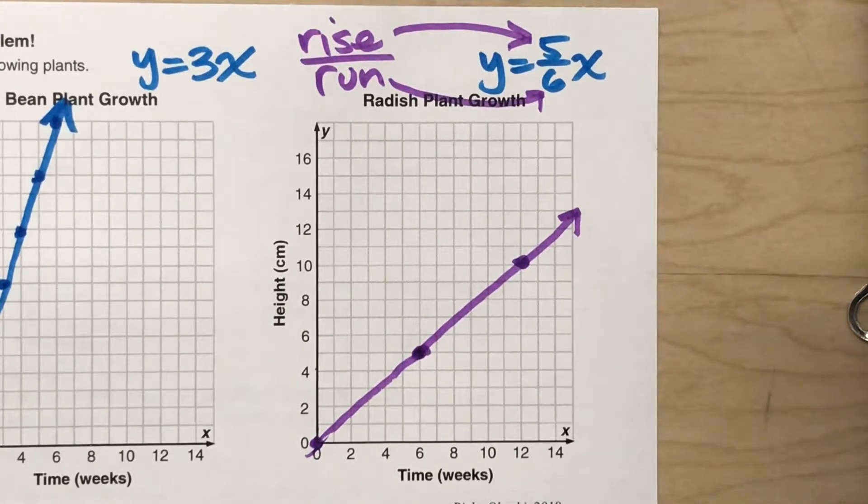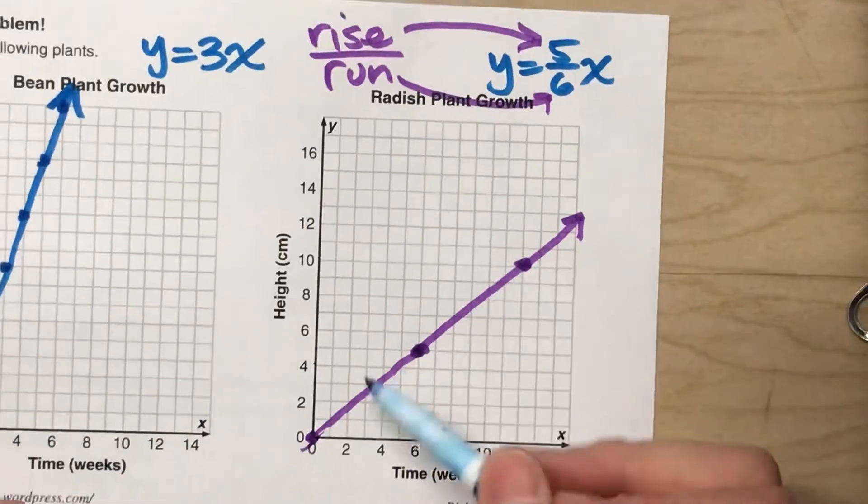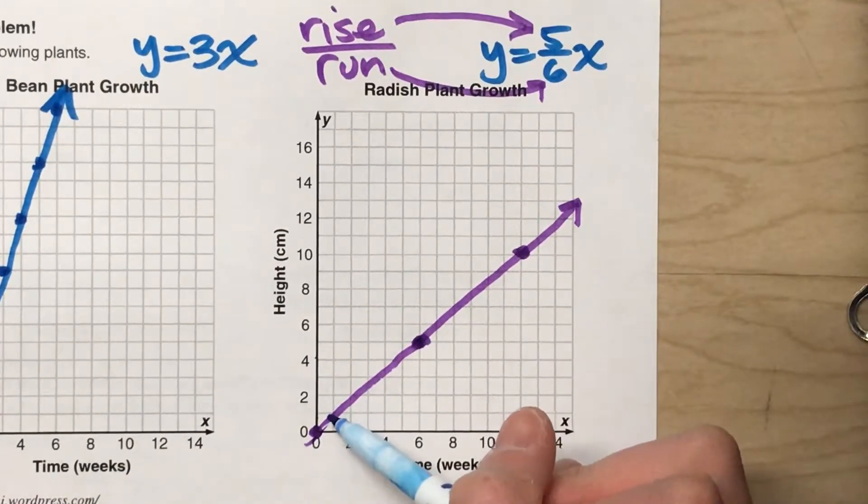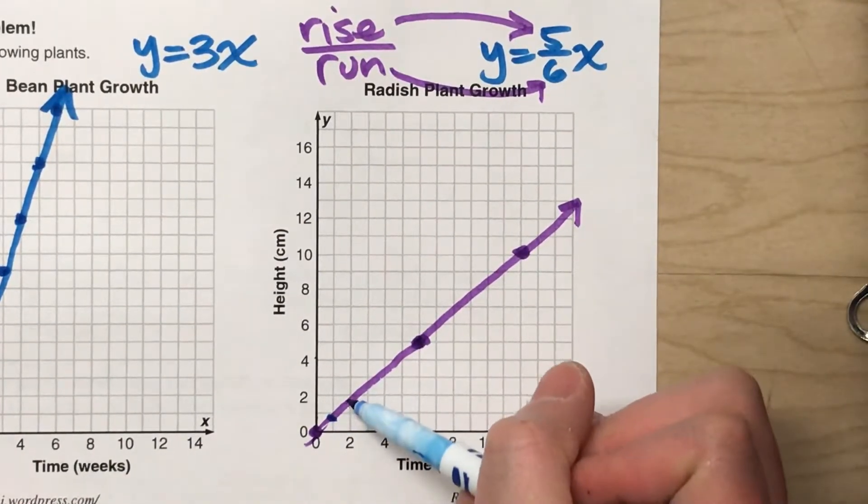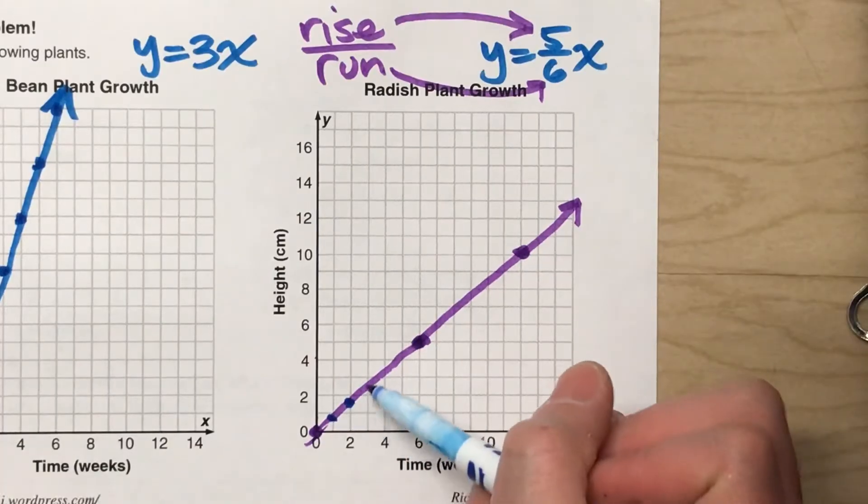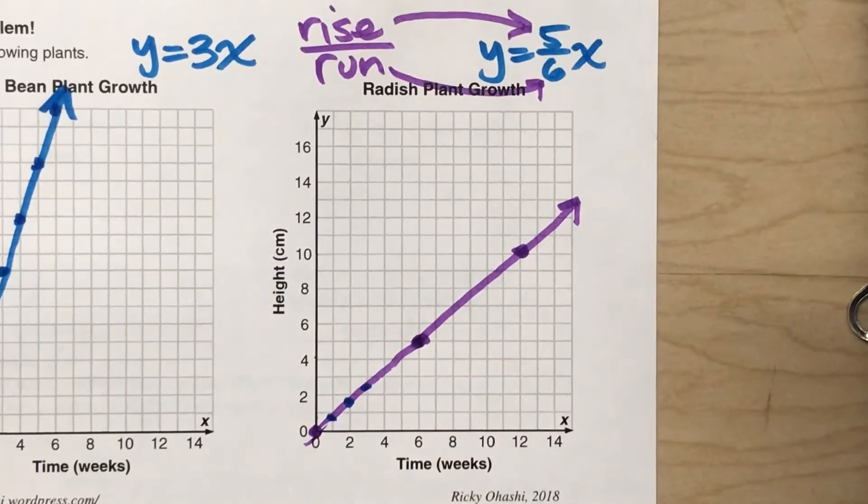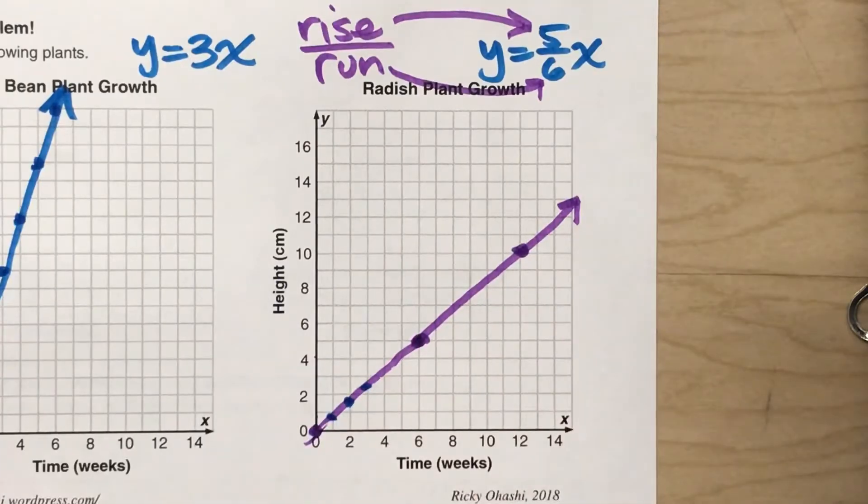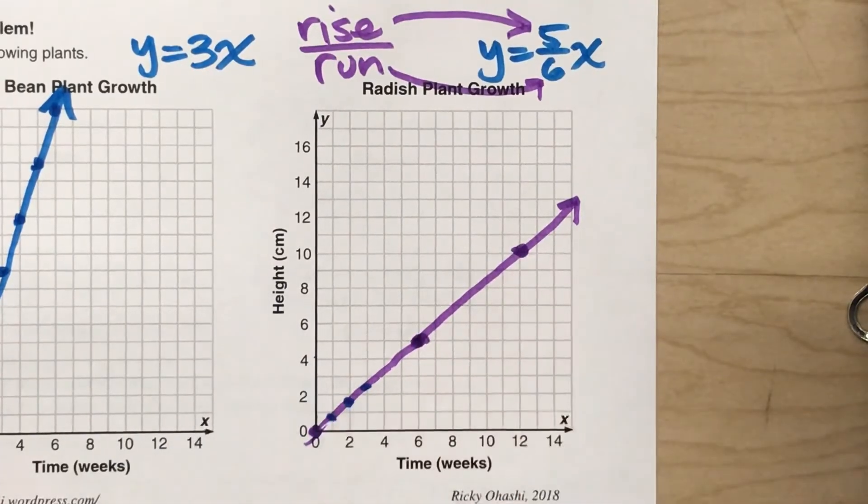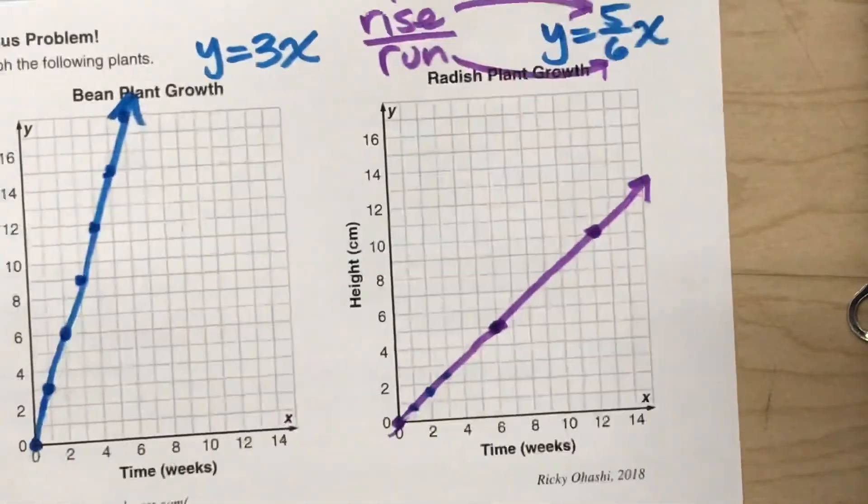Of course, we could have done it the old-fashioned way. 5 sixths of a centimeter after one week. An additional 5 sixths of a centimeter the following week. But it's just really hard to graph. So we can use this little shortcut to find the easy points to plot, and then draw our line.